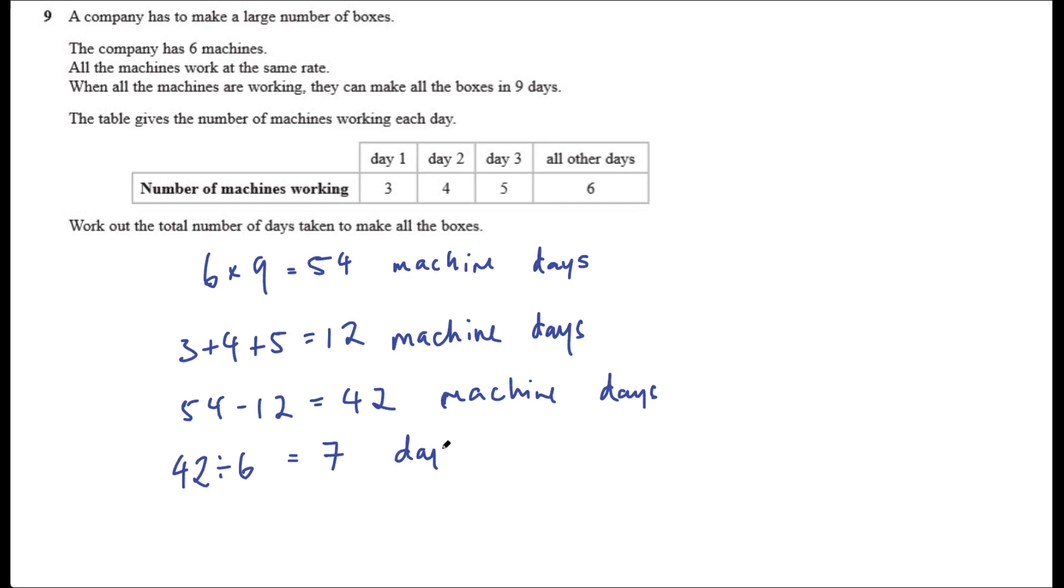So the total number of days, then, is the first three days plus those extra seven days. So total would be 7 plus 3 is 10 days. Okay, so that is a work rate problem. I'll do a couple more examples in a minute, but there's a few questions here.